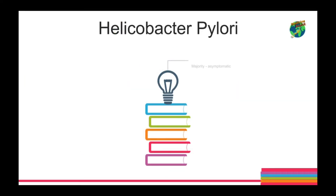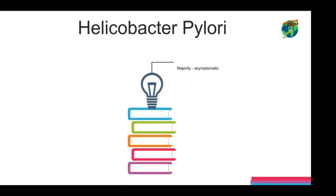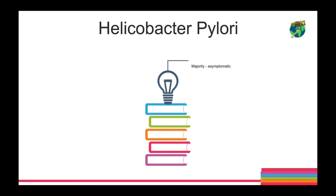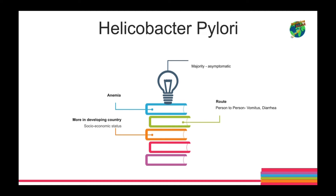H. pylori infection causes chronic gastritis in infected individuals and is usually linked to peptic ulcer disease. The majority of infected individuals remain asymptomatic, but 10 to 20% will develop peptic ulcer disease during their lifetime, and about 1% develop gastric cancer. An association between H. pylori infection and iron deficiency anemia has been established, but cause and effect has not been proven. H. pylori prevalence is more common in developing countries, correlated with low socioeconomic level. The most common route of transmission is person-to-person, either gastro-oral or feco-oral, occurring primarily during childhood.